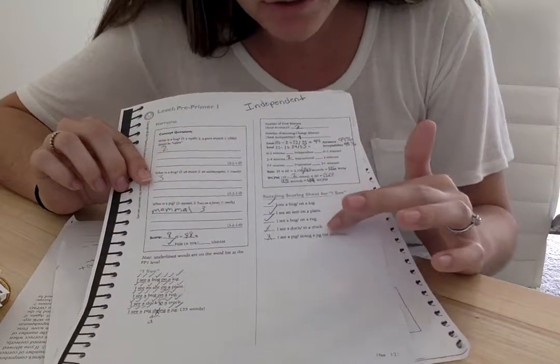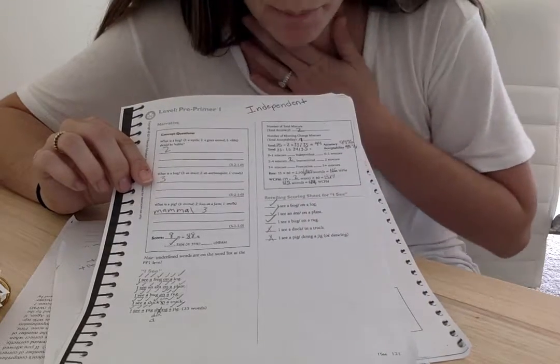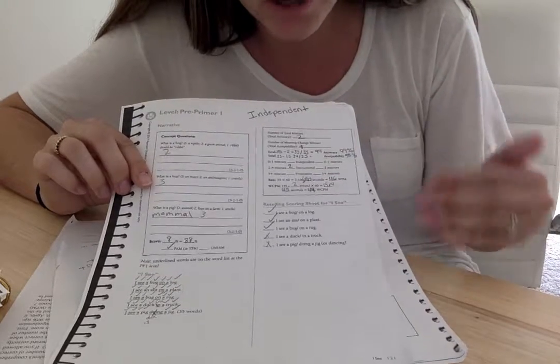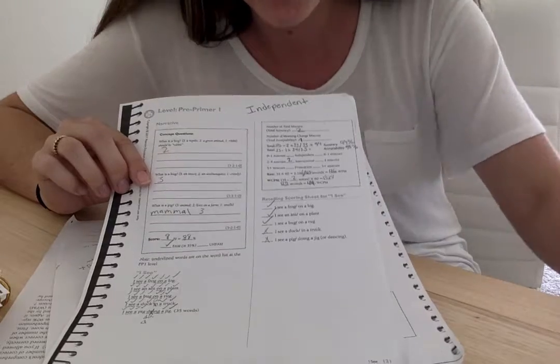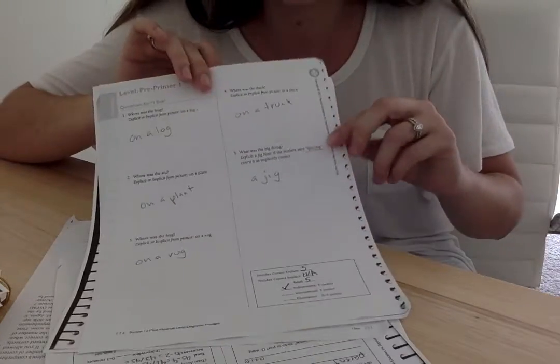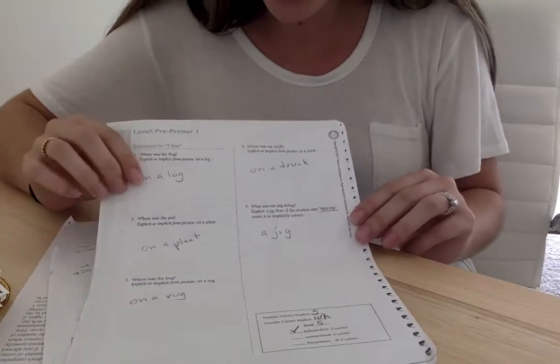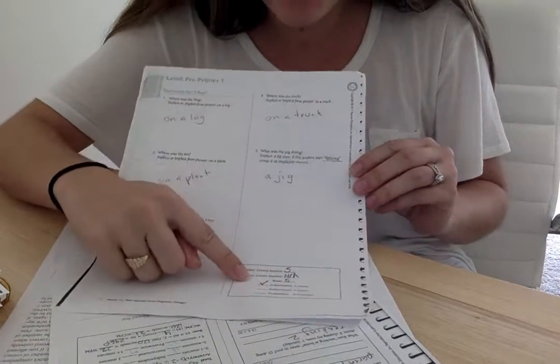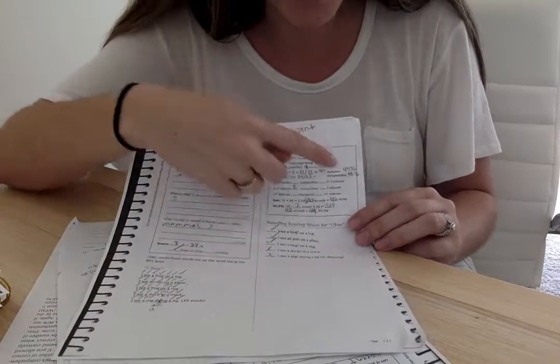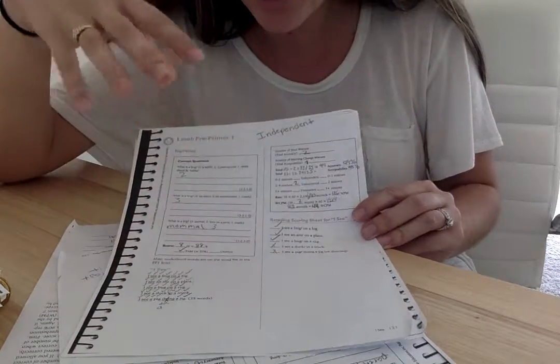We saw a little bit of confusion down here with the retelling of the story. So he missed two of those, which I think he swapped them. So he said he did the pig with a jig before, and then he did the duck in a truck. So I kept note of that. And then I went ahead to the comprehension questions again. And once again, he scored a five out of five on them. So based on all of this data, five out of five on comprehension is at an independent level and the number of miscues he got was a 98%, which is above that 97, which shows me that this is an independent level as well. So based on that, I decided to move him up to a pre-primer two passage.